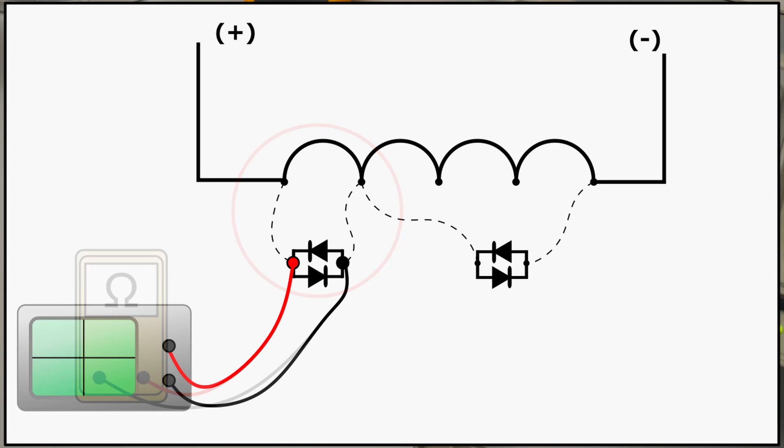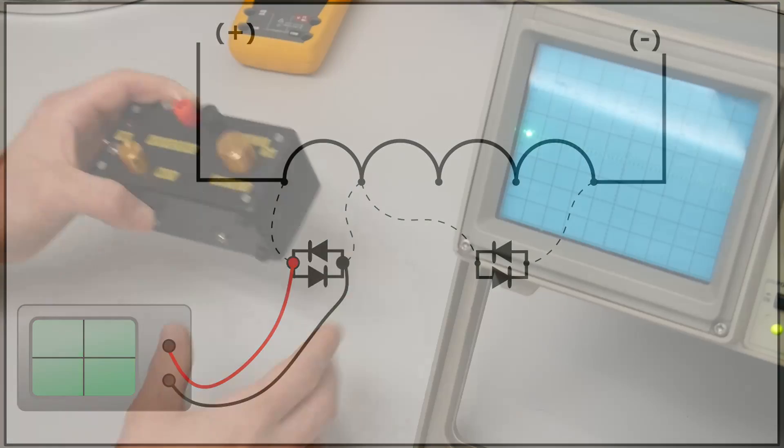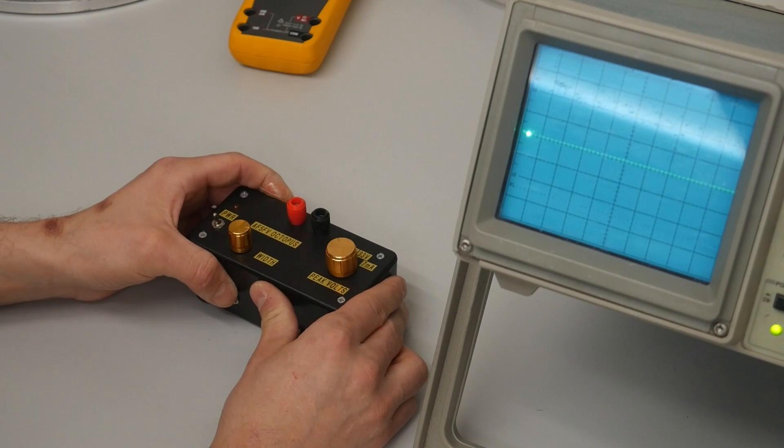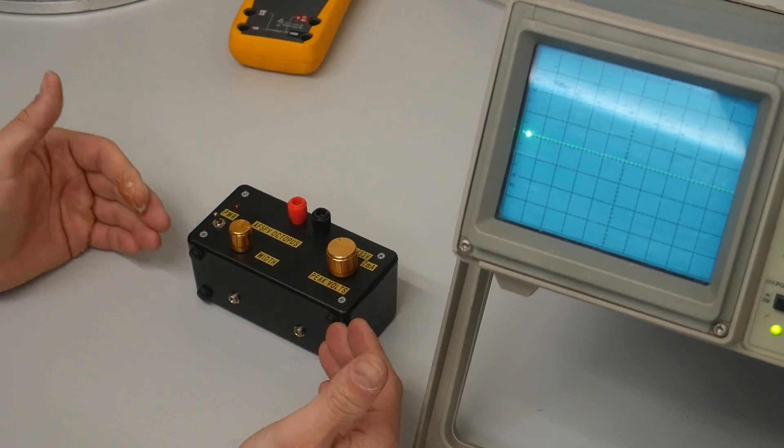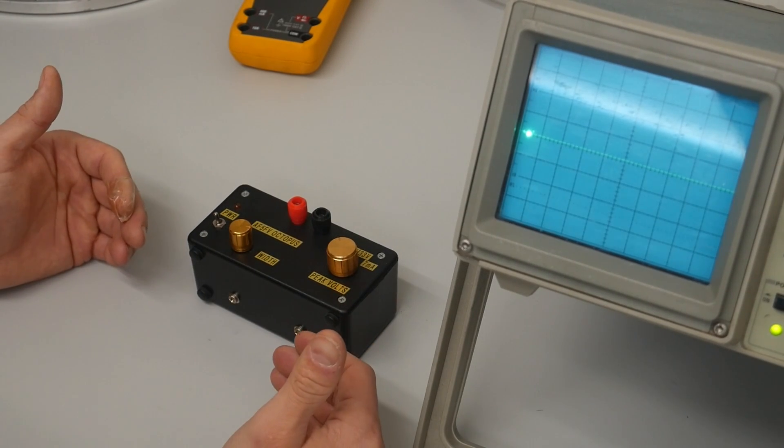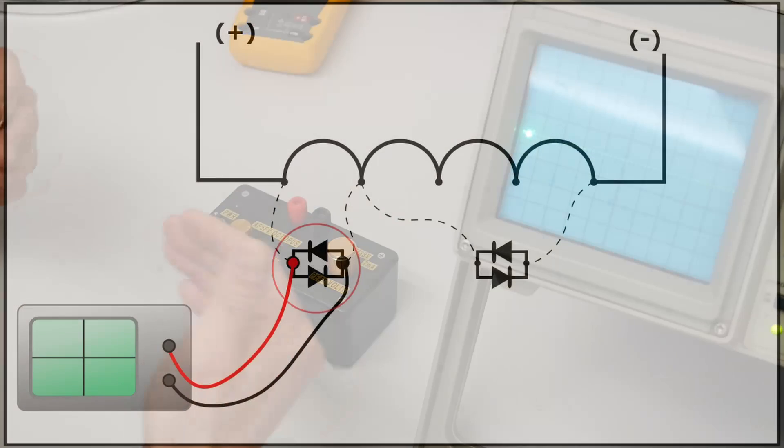What you're going to want to use is a curve tracer. A curve tracer is going to send an AC current through the coil and the diode, and because of the high inductance of the coil, current will flow through the diode before the coil, which allows you to more or less isolate the current.